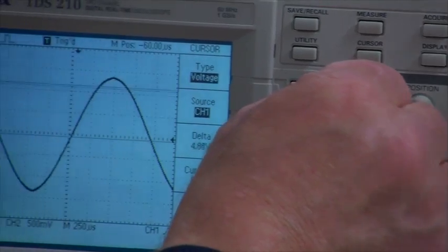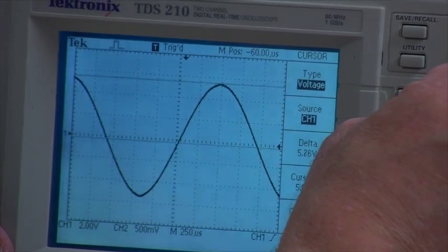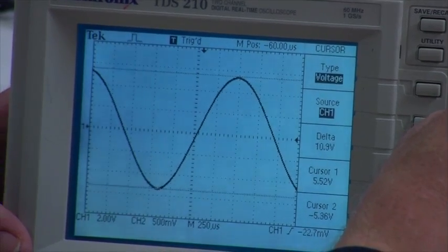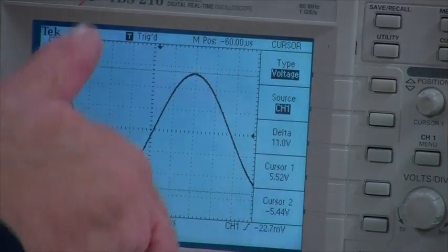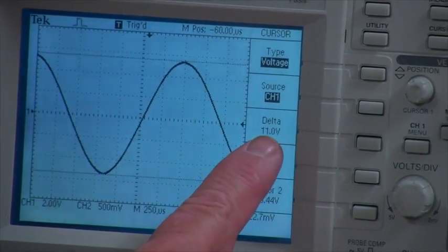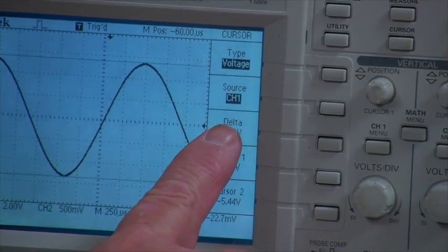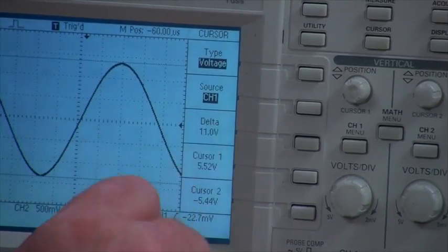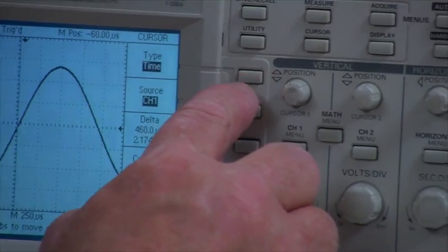If I move this one up to the very top of the wave and the other one down to the very bottom of the wave, I get what's called the peak-to-peak amplitude. And if you look right here on the screen, there's a window marked delta, and that says the difference between those two cursors is 11 volts.